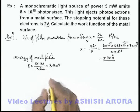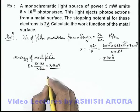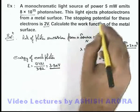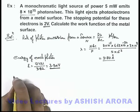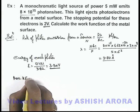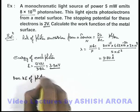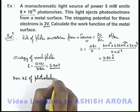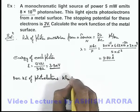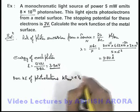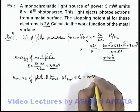This is the total energy incident on the metal surface, and we are given that the stopping potential of the electron is 2 volt. So the maximum kinetic energy of the photoelectrons — we directly write KE_max = eV₀, where V₀ is the stopping potential. Here it is 2 volt, which means KE_max = 2 electron volt.